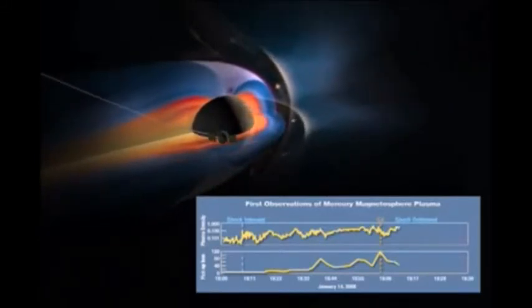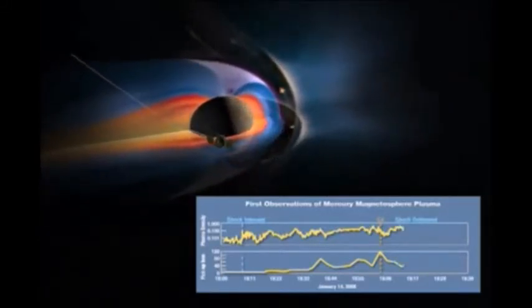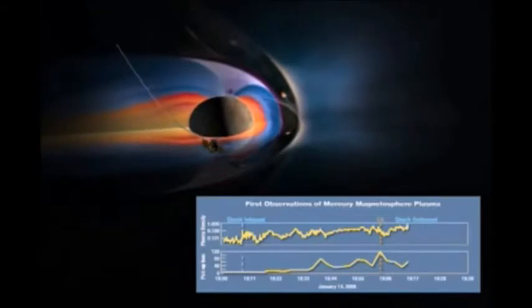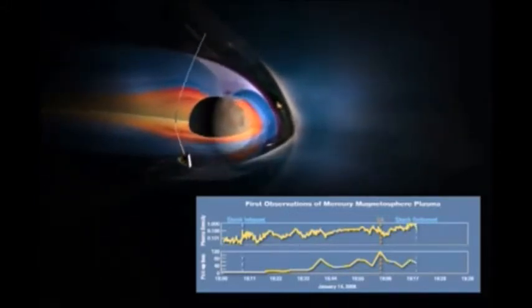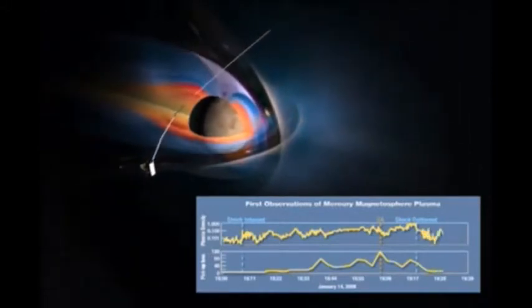For example, Mercury's magnetic field being weaker than Earth's may be because its core had cooled and solidified more quickly than the Earth. Scientists have detected Mercury's magnetic field to be weaker than Jupiter's moon Ganymede's.